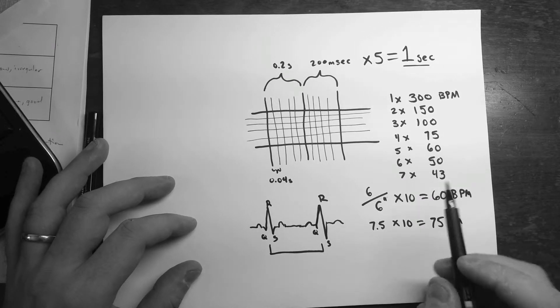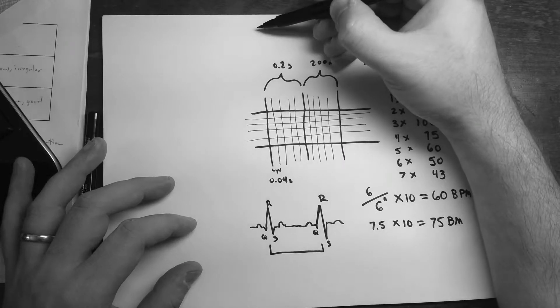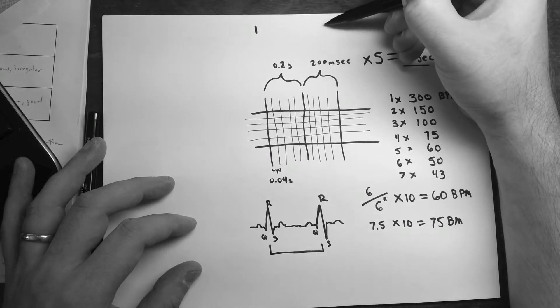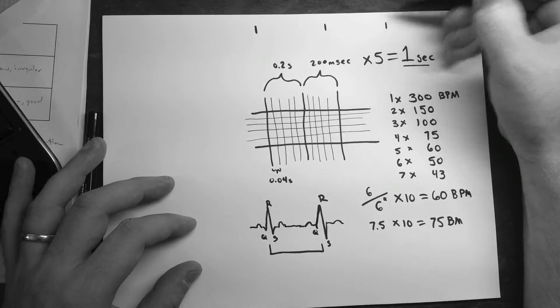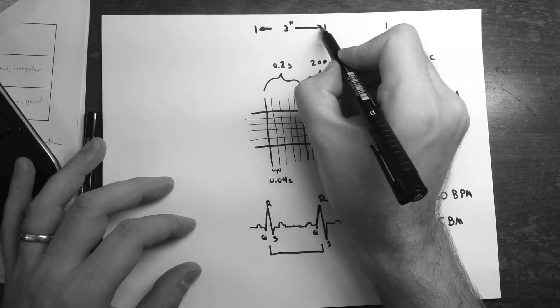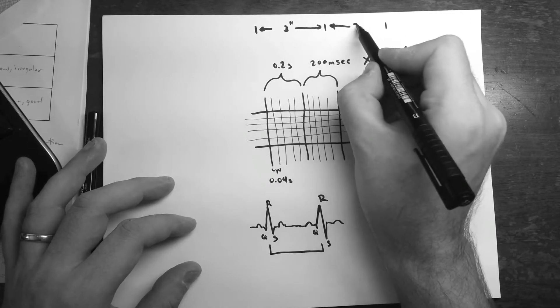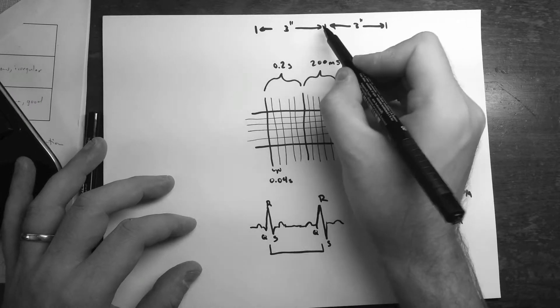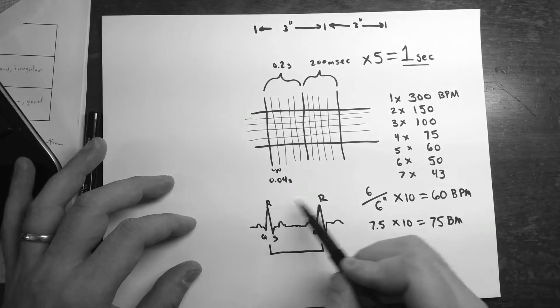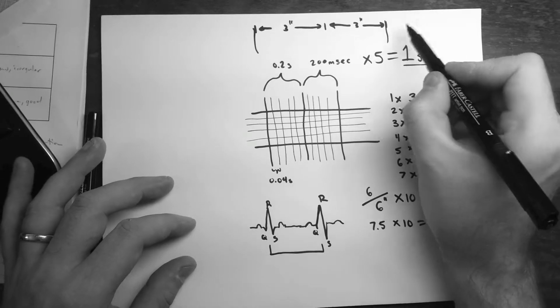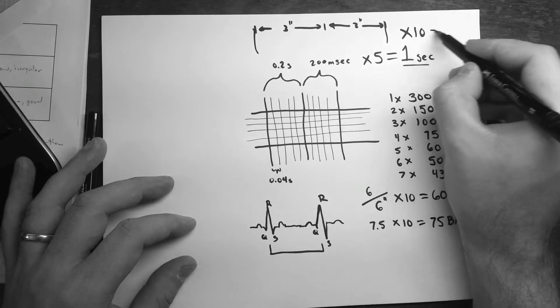And usually, the quickest way to do this is sometimes at the top of some of these EKG papers, there's little ticks. And that'll be at the very top. And each one of those ticks, three seconds. So you just add up two of those, count up how many of these R peaks are within those three seconds within this area, and then multiply it by ten, and that'll give you your rate.